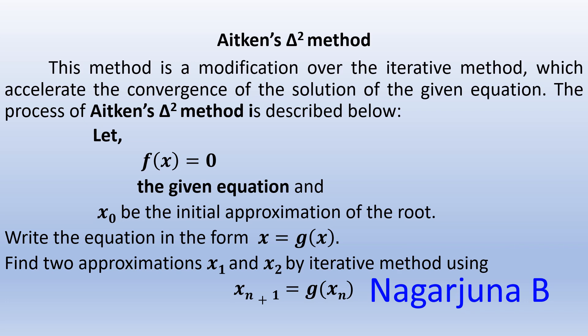When n = 0, x₀₊₁ = x₁ = g(x₀). When n = 1, x₁₊₁ = x₂ = g(x₁). So from the given equation, find the initial approximation x₀, then write the equation in the form x = g(x), and use that to find x₁ and x₂.